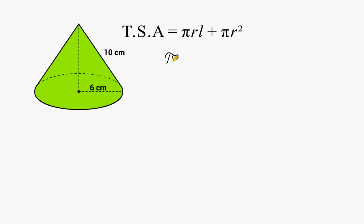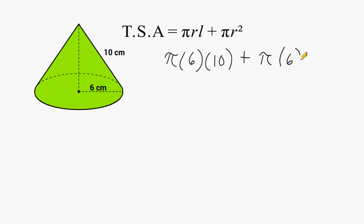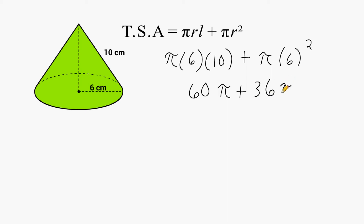We substitute r with 6 and the slant height with 10. Multiplying those three values together gives us the lateral area. On the other side, we substitute 6 for the radius and solve πr². Starting with 6 times 10, which is 60, we rewrite that part as 60π. Then 6 squared is 36, so we rewrite that part as 36π.